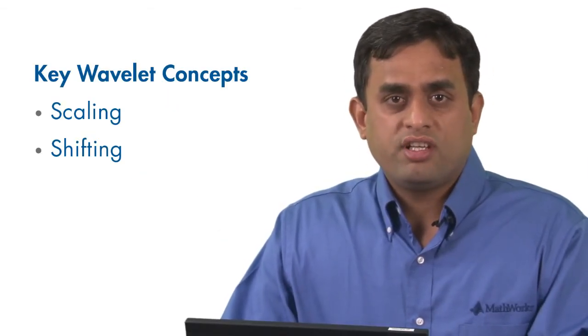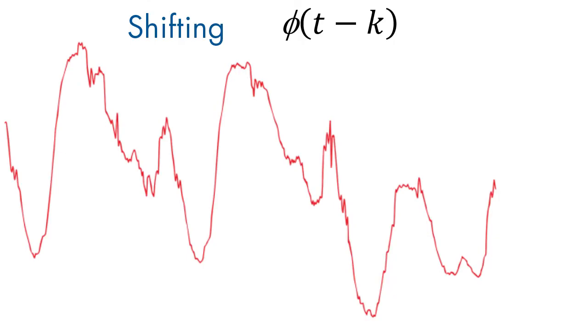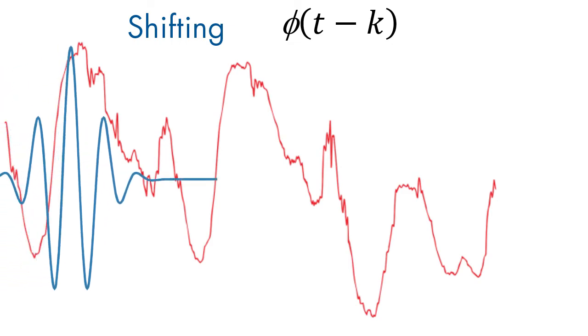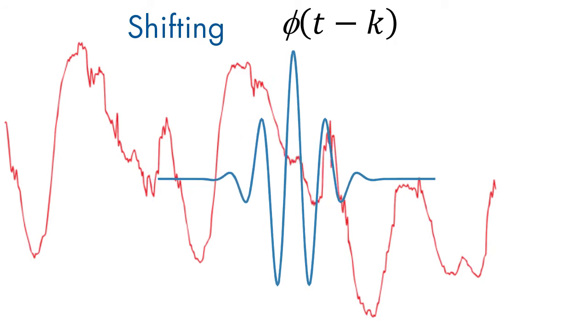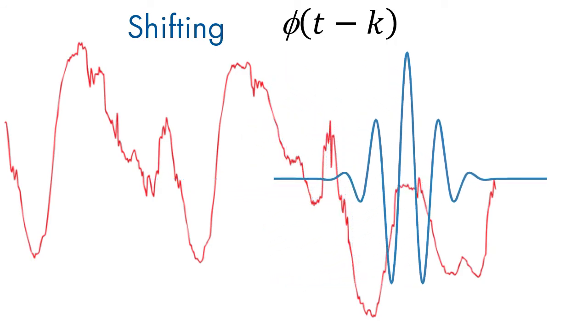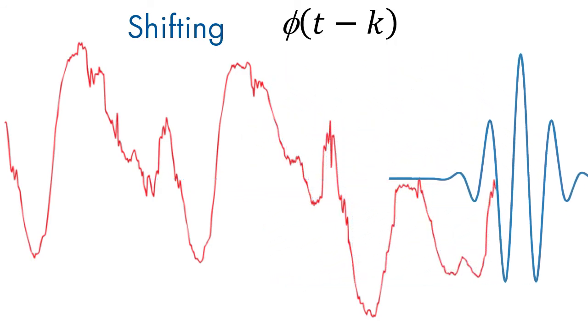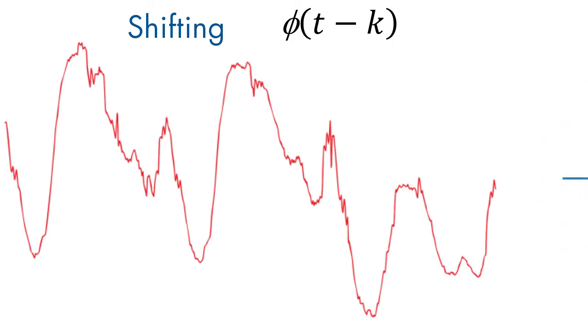Shifting a wavelet simply means delaying or advancing the onset of the wavelet along the length of the signal. A shifted wavelet represented using this notation means that the wavelet is shifted and centered at k. We need to shift the wavelet to align with the feature we are looking for in a signal.